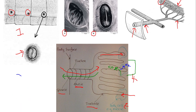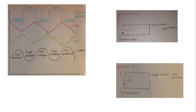Moving on to the next slide, there's a graph that summarises the ventilation movements, as well as changes in carbon dioxide and oxygen levels within the tracheal system. It also takes into account the opening and closing of the spiracles, because as I said earlier, they don't remain open all of the time.